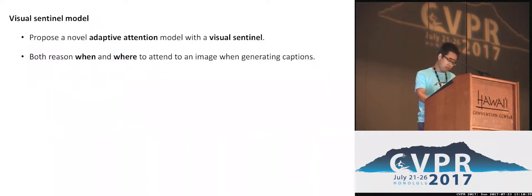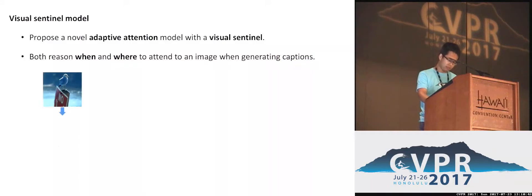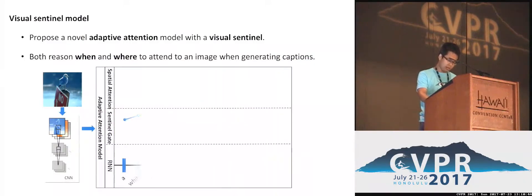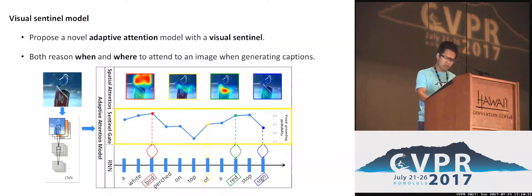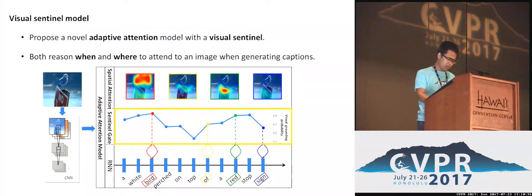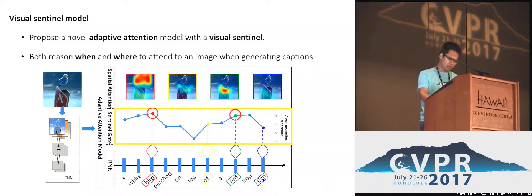In this paper, we propose a novel adaptive attention model with a visual sentinel. The visual sentinel is a gate function that can control how much image information is needed for the decoder. Our model can reason both when and where to attend to the image when generating captions. For example, our model can learn to attend to the image more when generating words like 'bird' and 'red,' and attend to the image less when generating words like 'of' and 'sign.'